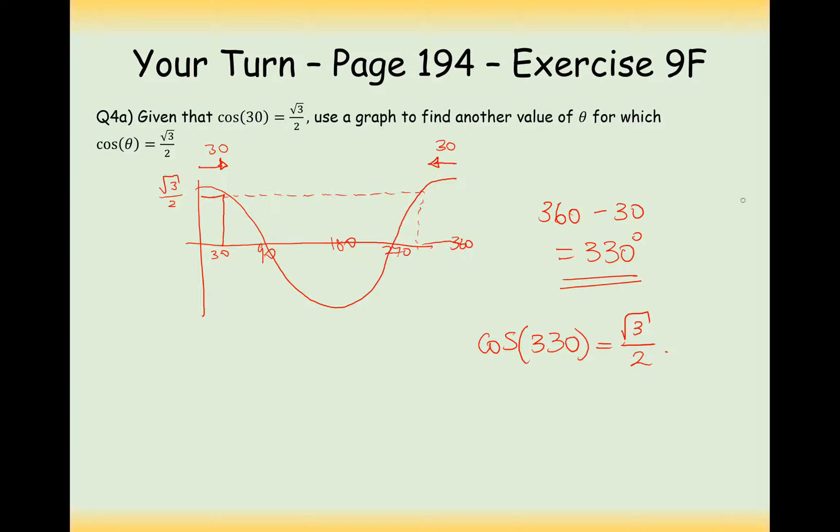Now there are infinitely many angles that will give you root 3 over 2, both positive and negative, but it did just say here find another theta angle. And generally, within a question, it will give you some boundaries for your angles as well. Right, have a go at plenty of this in questions on exercise 9f. It is going to come in really useful when we start to solve trigonometric equations. So have lots of practice at it, and you'll be okay for later on videos.